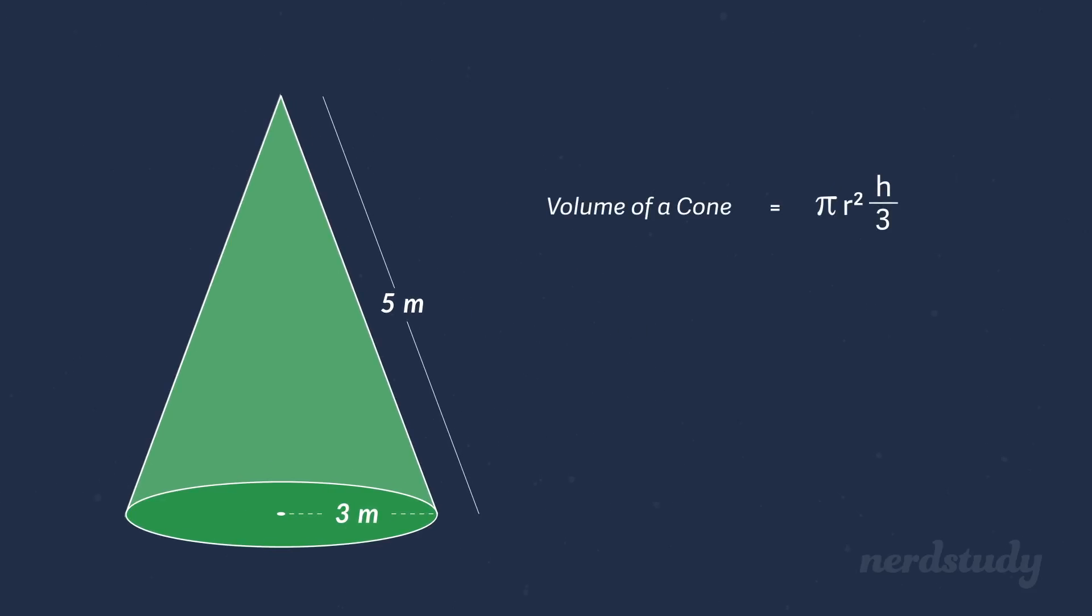Well, the formula is the following: volume of a cone equals pi r squared times h over 3. So we have the dimensions for r here, which is 3.